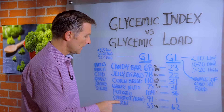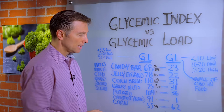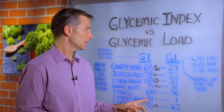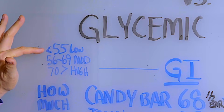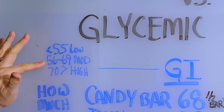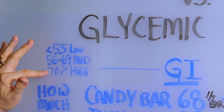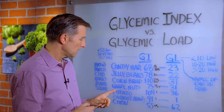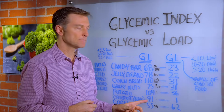Let me give you an example. A raw carrot is 91 on the glycemic index. Now, 55 or less is low, 56 to 69 is moderate, and over 70 is high. So according to this scale, the carrot would be high because it's 91.